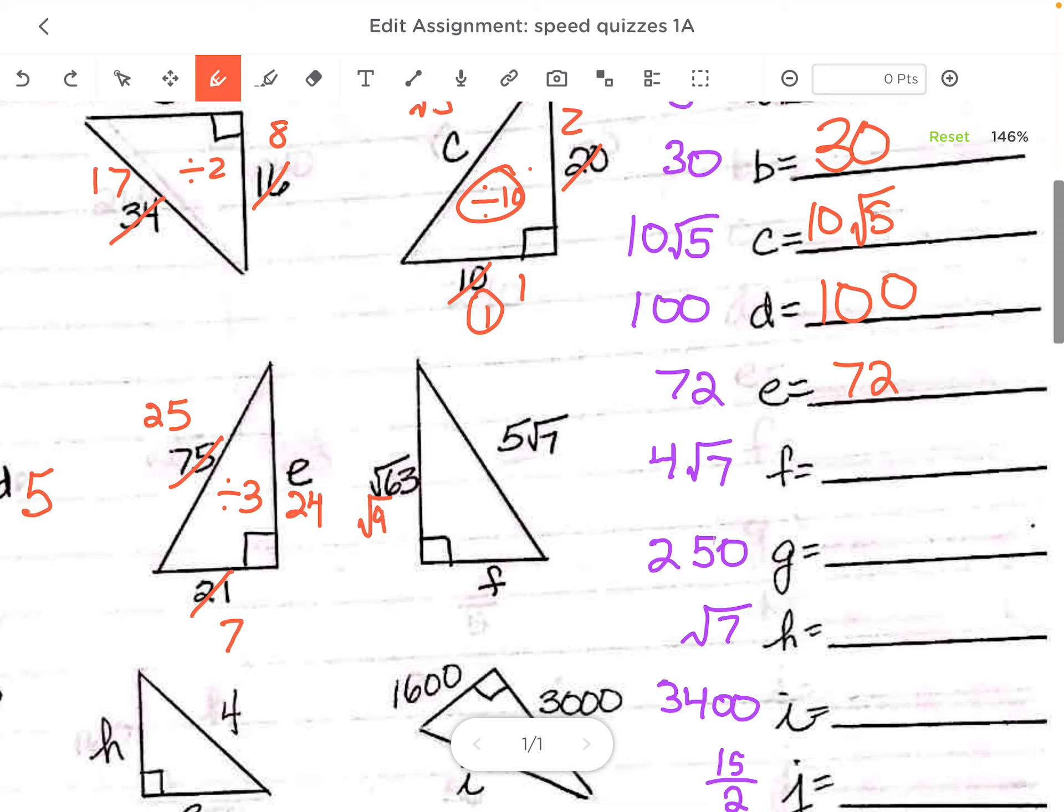63, I know this splits up into 9 times 7, which is 3 root 7. Oh look, 3 root 7, 4 root 7, 5 root 7. So the answer is 4 root 7.